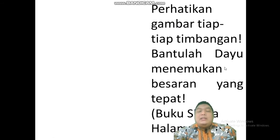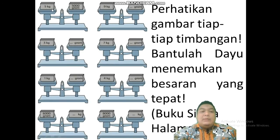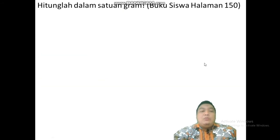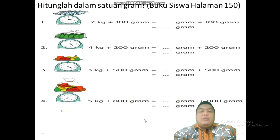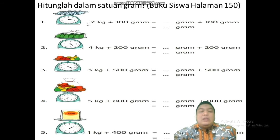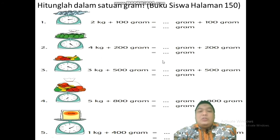Berikutnya: perhatikan gambar tiap-tiap timbangan dan bantulah Dayu menemukan besaran yang tepat. Kalian bisa buka buku siswa halaman 149. Cuma dirubah — 5 kilo itu berapa gram? Ini contohnya sudah ada. Begitu pula dengan yang lainnya: 9 kilo berapa gram, dan seterusnya. Hitunglah dalam satuan gram, bisa dibuka di buku siswa halaman 150. Tinggal dirubah menjadi gram semua. Satuannya dirubah dulu — ini kan ada yang tidak sama: 2 kilo lebihnya 100 gram, dirubah ke gram semua. Nomor 2, 3, dan seterusnya juga sama — satuannya disamakan dulu, dirubah ke gram.